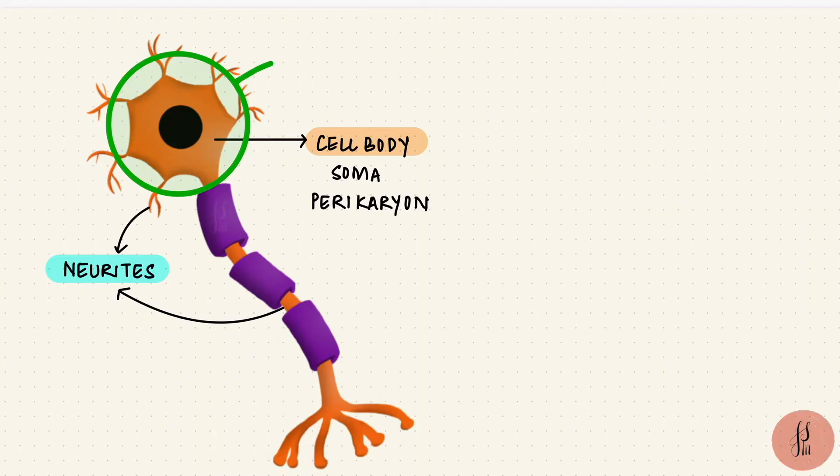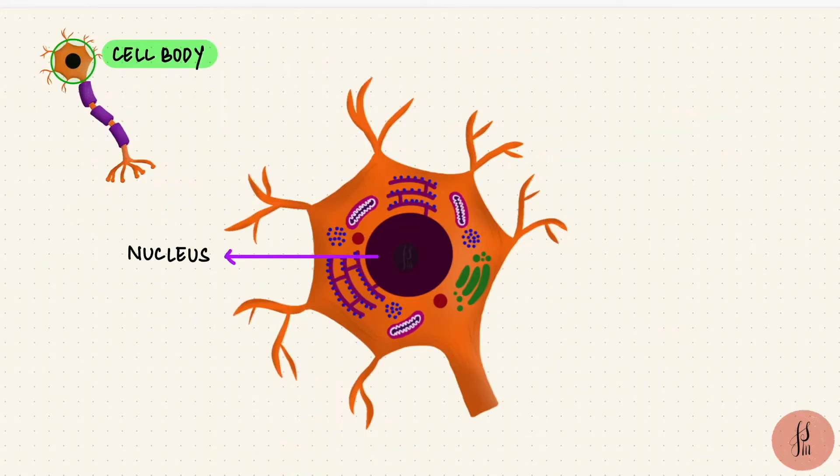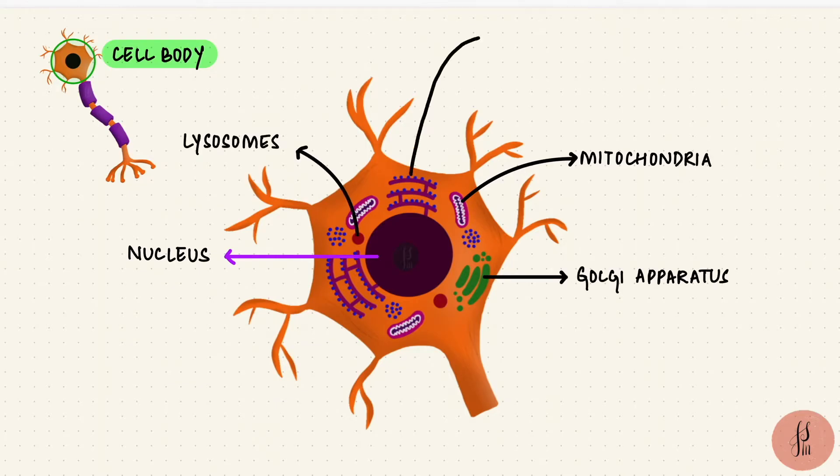The cell body has organelles like you'd see in other cells, but there's a large nucleus, there are mitochondria, Golgi apparatus, lysosomes. They also have modified rough endoplasmic reticulum. These are called Nissl granules, or Nissl substance, or Nissl bodies.